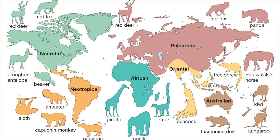On the map, the Nearctic region is northern America, the Neotropical region is southern America, the Afrotropical region is mainly Africa, the Palearctic region is the northern part of Asia, the Oriental region is the Indian subcontinent, and there is also the Australian region. All these regions have different kinds of animals, which is why they are divided into different parts based on the animals found there.